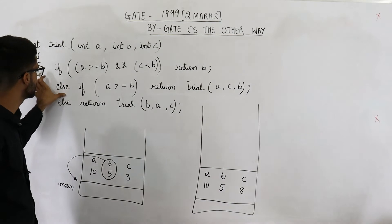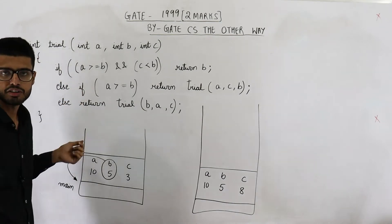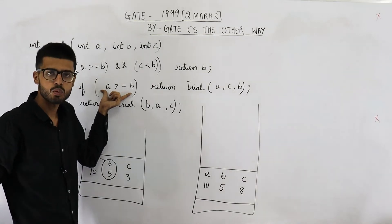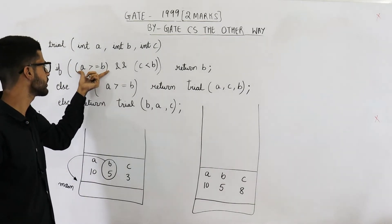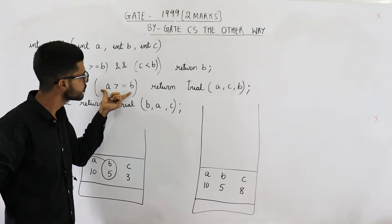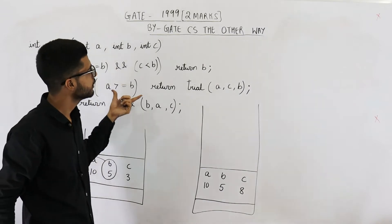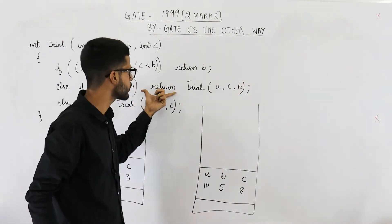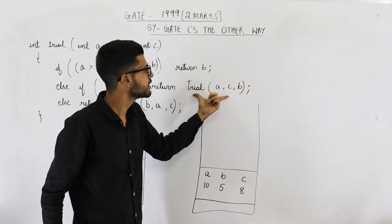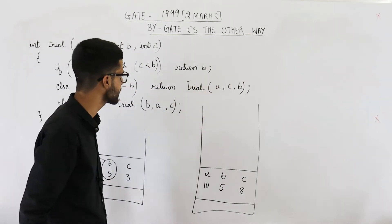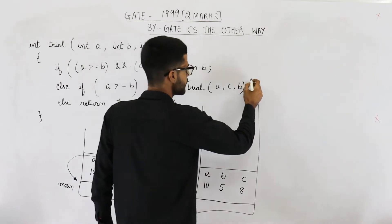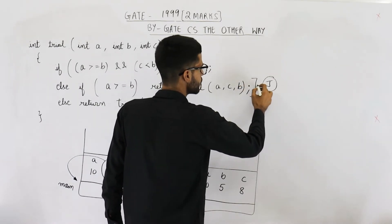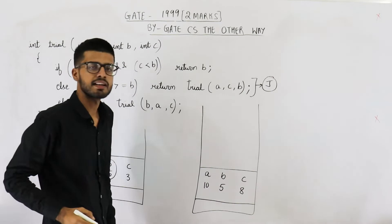In the else part there is one more if condition. Let us check it. A is greater than or equal to B — this is true, as we already seen. So you are going to execute this line, which means you are going to return trial(A, C, B). This is a complex line; let us label it as line number J.